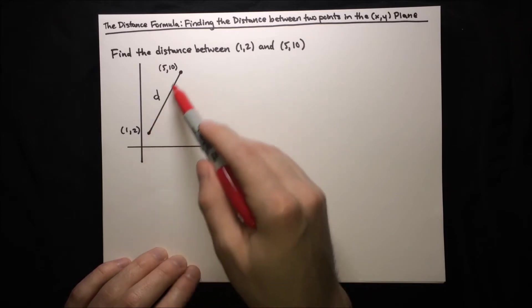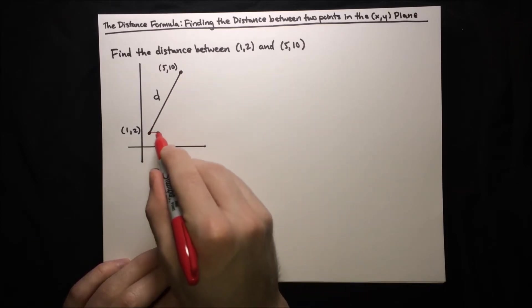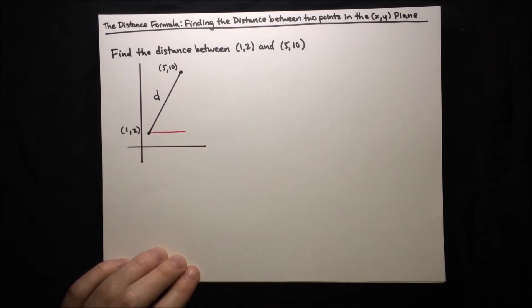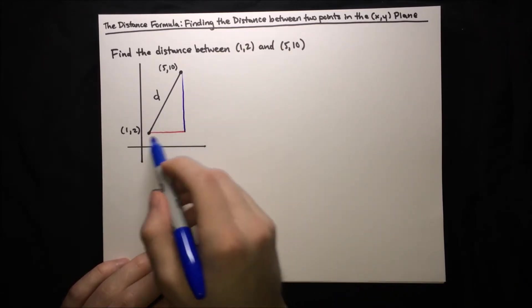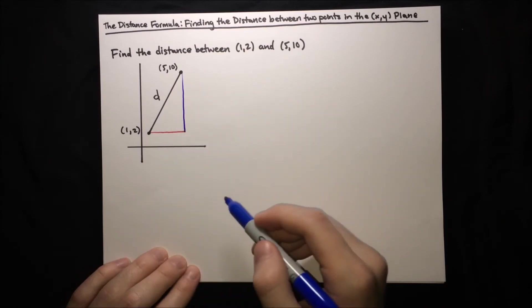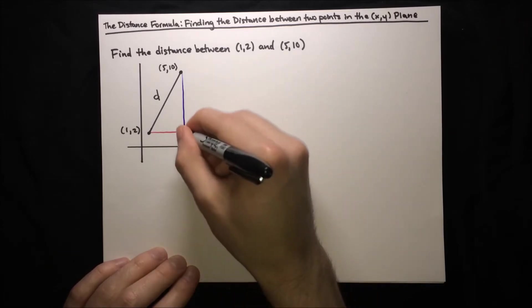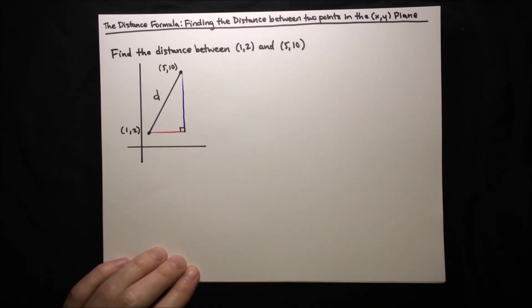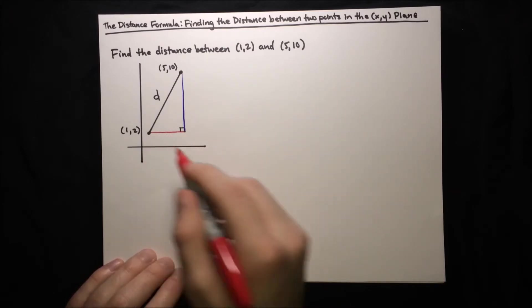But the idea is to decompose the diagonal distance into a horizontal distance and a vertical distance. This horizontal and vertical distance, they're easy to compute. And then once we know them, we can use the Pythagorean theorem because this is just a right triangle. So how do we find these distances? Well, we just have to look at the coordinates.